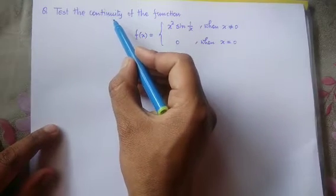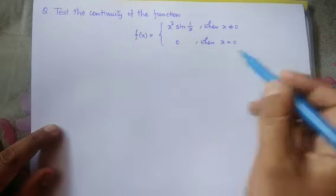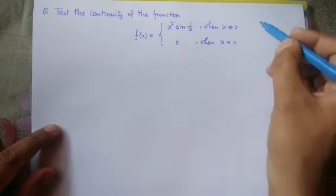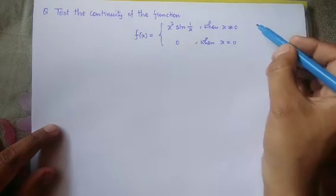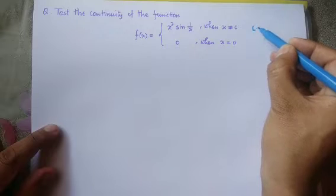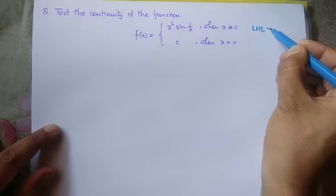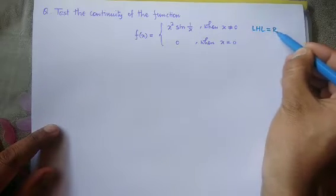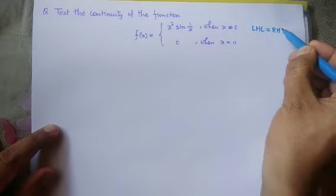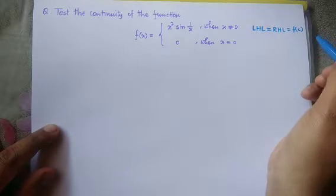Now we know that the necessary condition for a function to be continuous is: the left hand limit must be equals to the right hand limit, and this must be equals to the functional value.